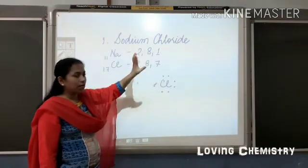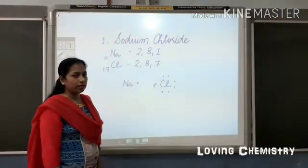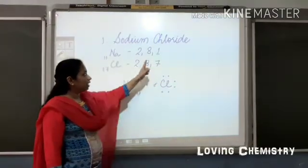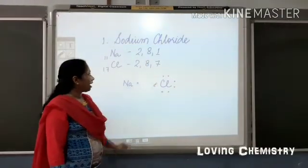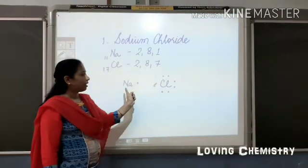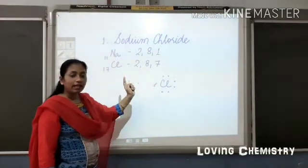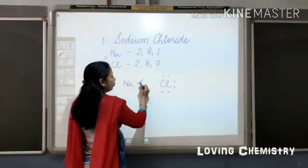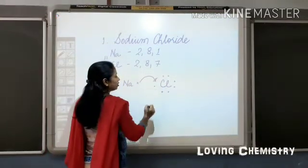And chlorine is one electron short of its stable electronic configuration. So sodium is allowed only to lose one electron, because it cannot gain seven electrons. So it can lose one electron and chlorine at the same time will gain that one electron. So this sodium will give its extra electron to chlorine.